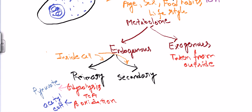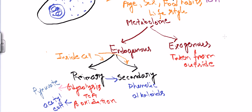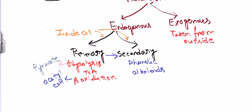Secondary metabolites are those generated by combining a few primary metabolites. For example, phenolic compounds inside our body and alkaloids are generated after the breakdown products of amino acid pathways. In the amino acid metabolism pathway, many amino acids are generated, and by combining those primary metabolites we can produce secondary metabolites. So the formation of secondary metabolites requires the attachment of a few primary metabolites.